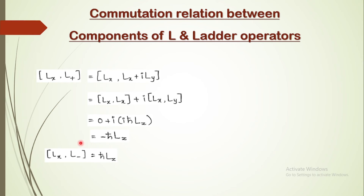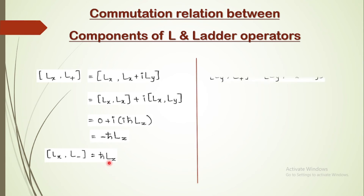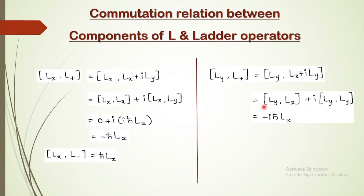Similarly, for the lowering operator, [Lx, L−] equals +ℏ·Lz, because in L− there is a minus sign, and minus times minus gives plus. Then considering the y component of angular momentum, [Ly, L+] equals −iℏ·Lz, because the second term vanishes and Ly and Lx are in anti-clockwise direction so a minus sign is associated with iℏ·Lz.